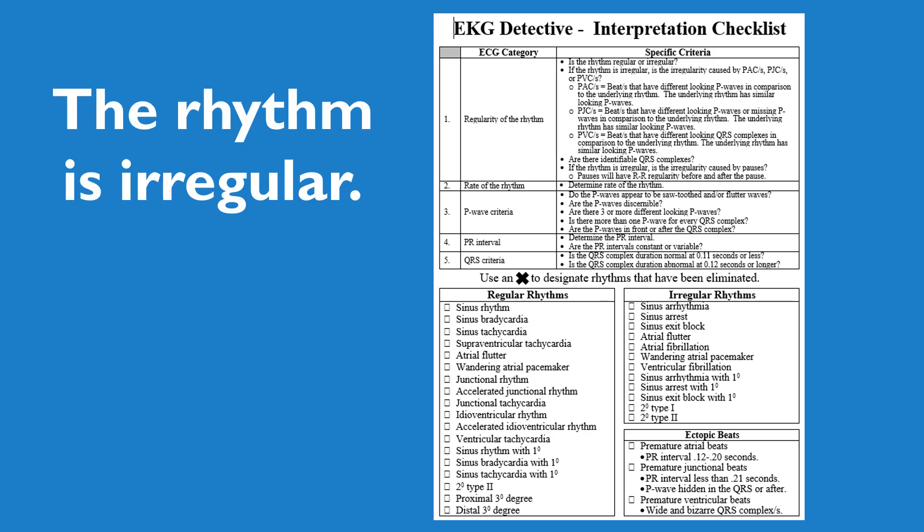Referring to our checklist, since we know the rhythm is irregular, we can deductively eliminate any of the rhythm options that are regular. If you're interested and would like a copy of this checklist, just reach out to me and I will make sure you get a copy to utilize for future videos.